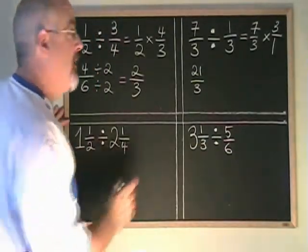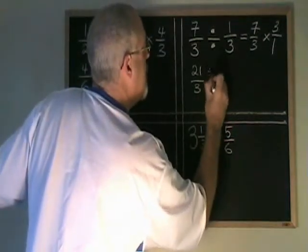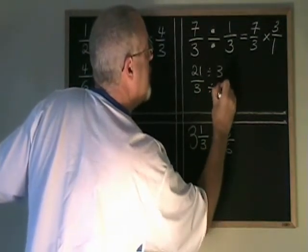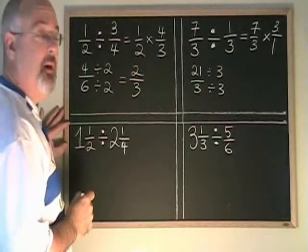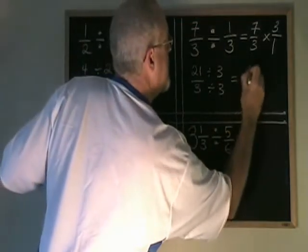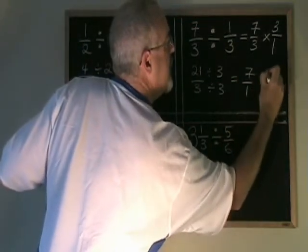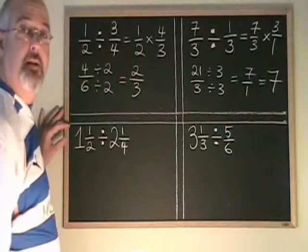21 and 3 have a common factor of 3. So I'll divide both of them by 3 to reduce my answer. And I get 7 over 1, which is equal to the whole number 7.